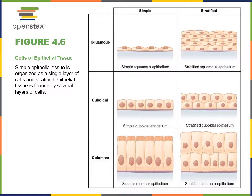Epithelia are classified based on the number of layers, as either simple, with just one layer of cells, or stratified, with more than one layer of cells. Epithelia are also classified by the shape of the cells. Specifically, in a stratified epithelium, you focus on the shape of the cells in the apical layer.